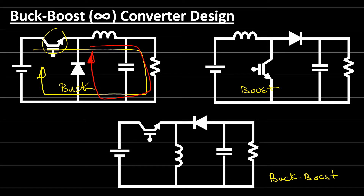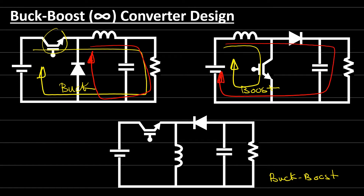For the boost converter, similarly, when the switch is conducting the current flows in one direction, and when the switch is off the energy stored inside the inductor forces the diode on and the current flows in the opposite direction. The opposite happens in the boost converter: we have two currents at the input and one current at the output, so the output voltage is greater than the input voltage because the output current is less than the input current.